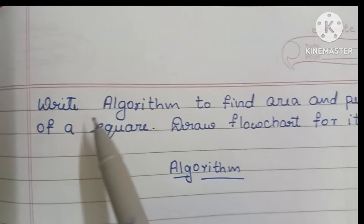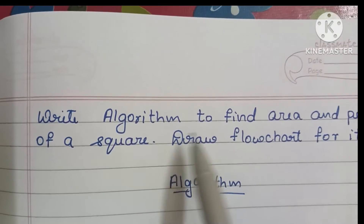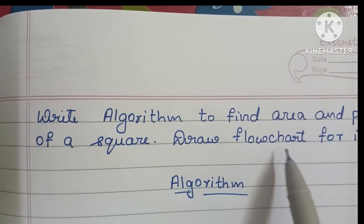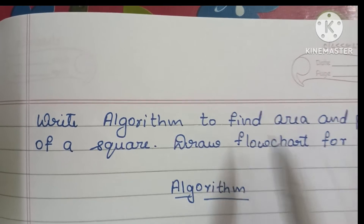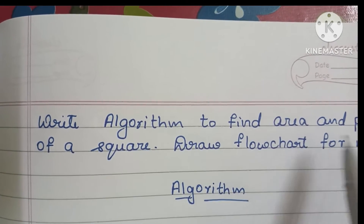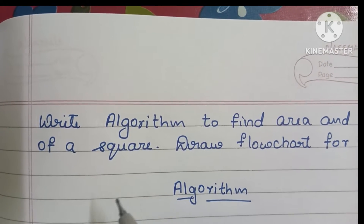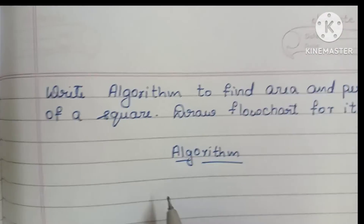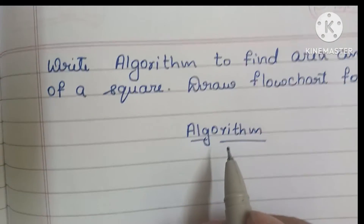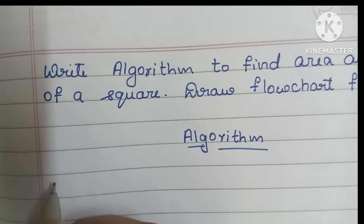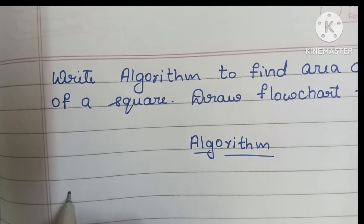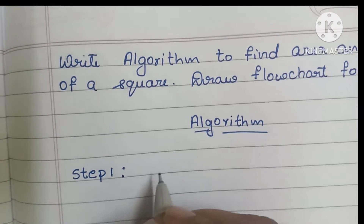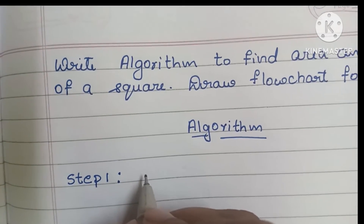Hi guys, in this video we're going to learn how to write an algorithm to find the area and perimeter of a square, and draw a flowchart for it. Algorithm is a step-by-step process to solve a problem. Step one in an algorithm is always to start with the start statement.